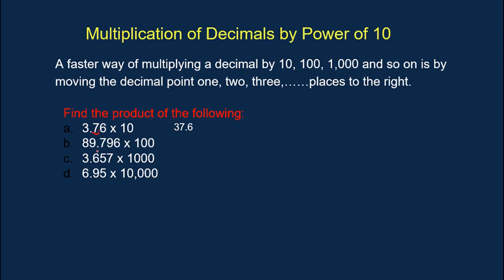Next, we multiply by 100. Since 100 has two zeros, we're going to move the decimal point two places to the right: one, two. Our final answer is 8,979.6. For the next one, we multiply by 1,000. Since 1,000 has three zeros, we move the decimal point three places to the right: one, two, three. Our final answer is 3,657.